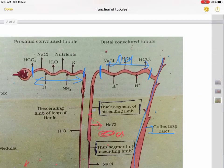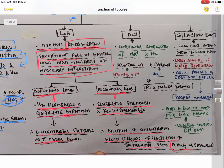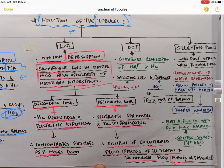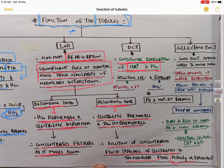The third part is DCT — distal convoluted tubule. In DCT there is conditional reabsorption of water and sodium ions. Why conditional? This reabsorption is regulated by aldosterone, which is secreted by the adrenal cortex. Aldosterone acts on the DCT and collecting duct — the distal part of the tubule — and promotes reabsorption of sodium; when sodium is reabsorbed, water follows. Since this reabsorption depends on the hormone aldosterone, it is called conditional reabsorption.